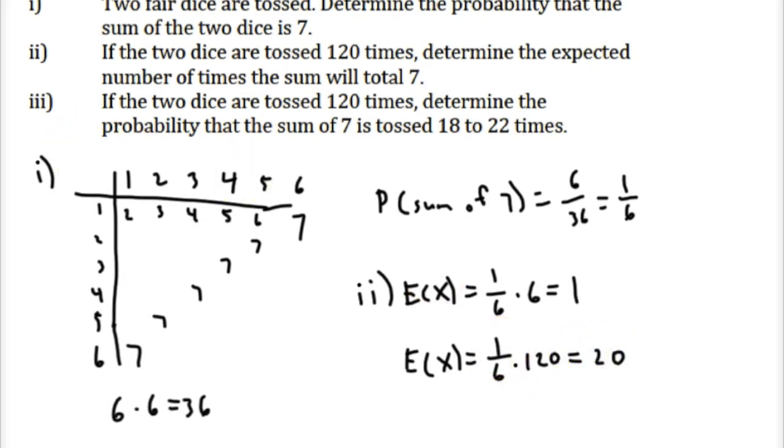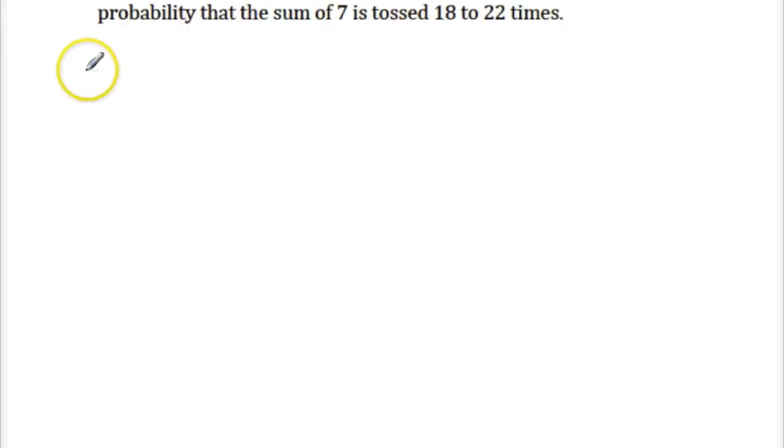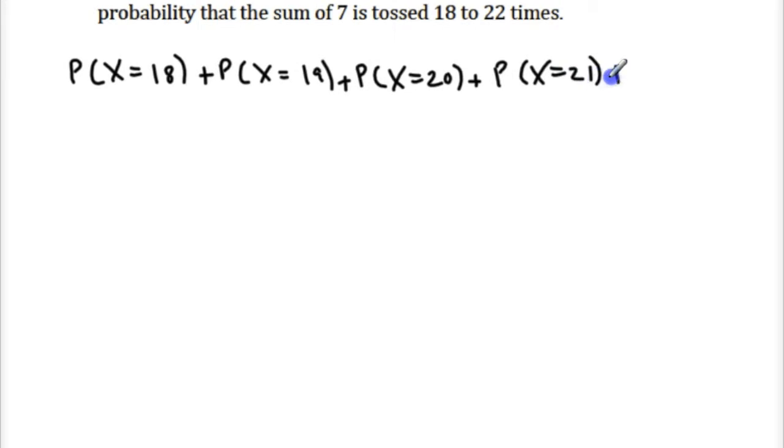Let's go on to part three, where it says, if the two dice are tossed 120 times, determine the probability of the sum of seven is tossed 18 to 22 times. What that means is that we would have the probability that it happens 18 times, plus the probability that X equals 19, plus the probability is 20, plus the probability is 21, and lastly, it is 22.